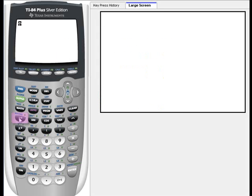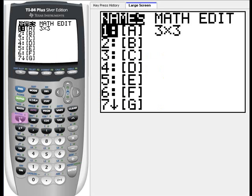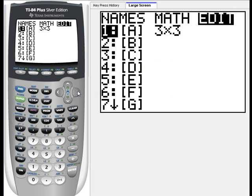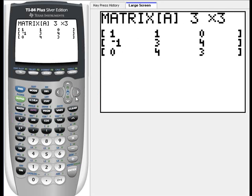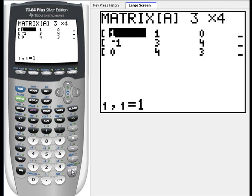Open the matrix menu. And let's edit matrix A. We want a three by four matrix. And that is three rows and four columns. Let's type in the entries for each row and column. There it is. I just did it for you.